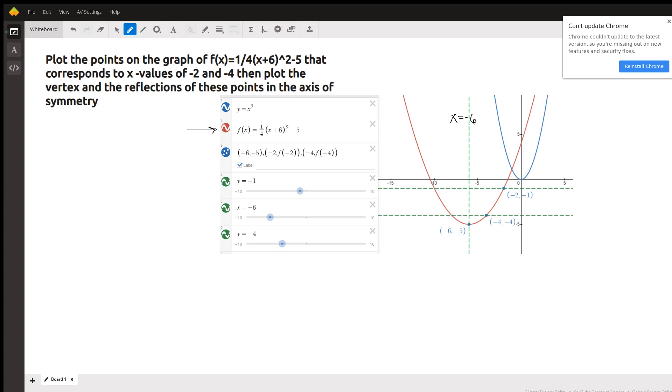Some textbooks call that standard form, but the point is it's easy to identify the vertex when it's written in this form because the formula is y equals a times the quantity x minus h, x minus h to the quantity squared plus k. When it's written in that form, the vertex is at h, k.